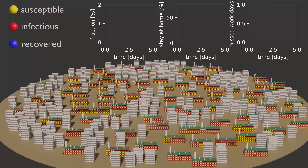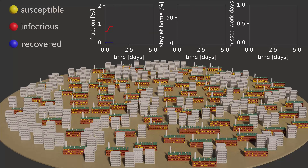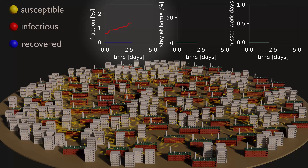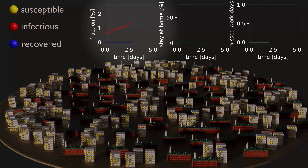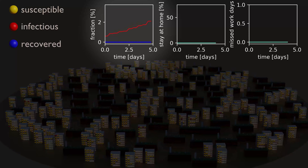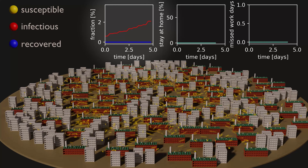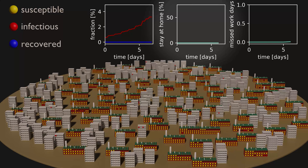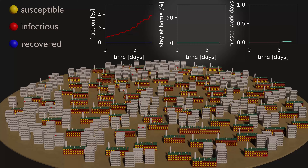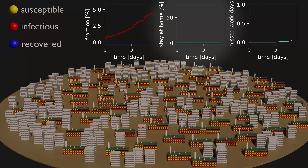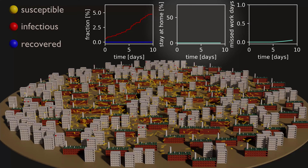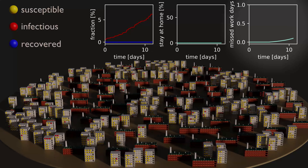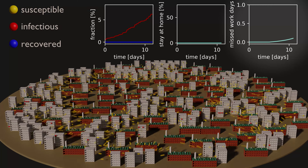So enough of the introduction, let's look at the simulation results. The leftmost graph shows which fraction of marbles is in the susceptible, infectious, or recovered state. You can see that in the initial phase the number of infectious marbles is growing exponentially. The graph in the middle shows the fraction of marbles ordered to stay at home — in the beginning no marbles are ordered to stay at home. The graph on the right shows the accumulated number of missed workdays per marble, used as a crude indicator of economic impact.